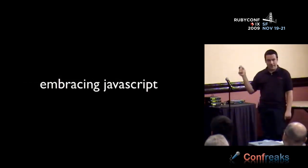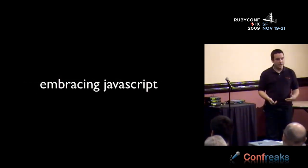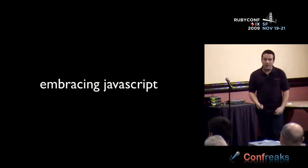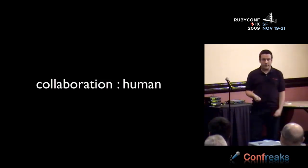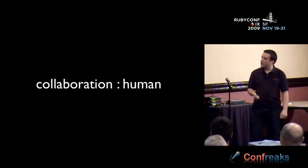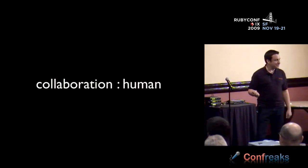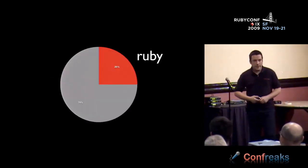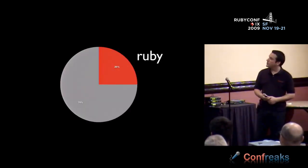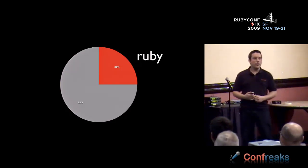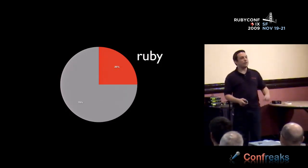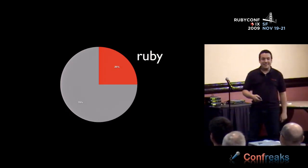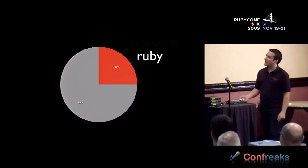That's not very pragmatic. So what about today? Embracing JavaScript is the best way to deal with it at this time, and this allows us to embrace collaboration in various aspects. The first is collaboration in the human context. Looking at numbers from GitHub: 25% of the code on GitHub is Ruby — that's a huge community. Lots of us are already here, and we have a cool community.